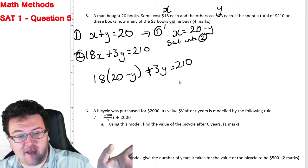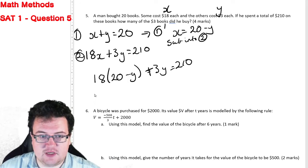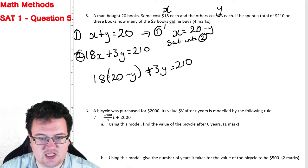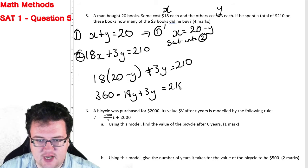X's are gone. I don't care about the X's, but they're gone anyway. All right, and now I can expand all this. So 18 times two is 36 times 10 is 360. So it's 360 minus 18Y plus 3Y equals 210.